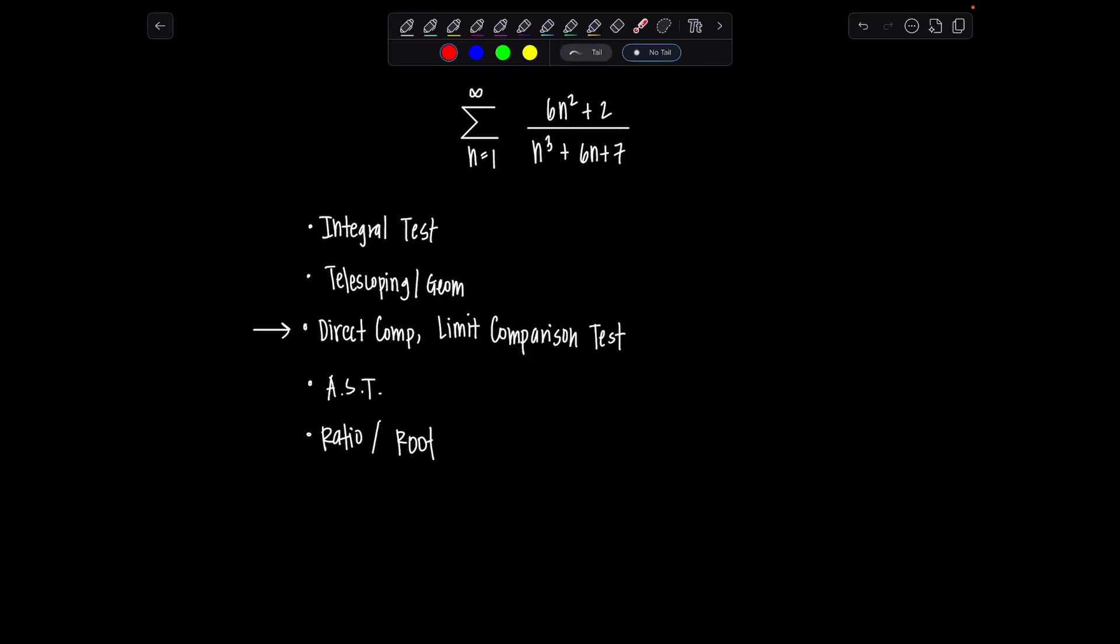So in order to determine what to even compare this series to, you have to figure out how fast it's growing or what's an appropriate choice. So in order to do that, look at the highest power of n in the numerator and the highest power of n in the denominator. That's controlling the growth or shrinkage of each term. So we have n squared in the numerator and then we have an n cubed in the denominator. So that simplifies to 1 over n.